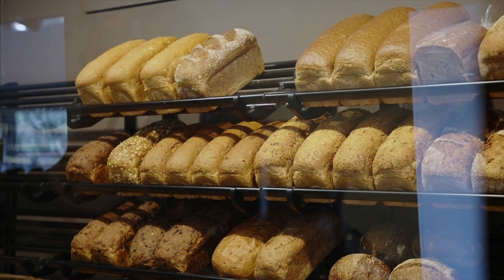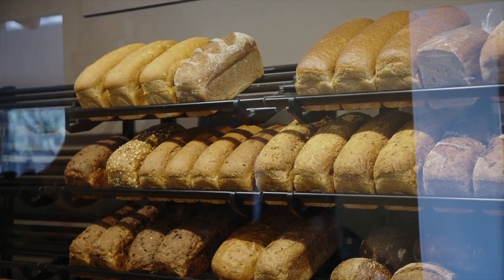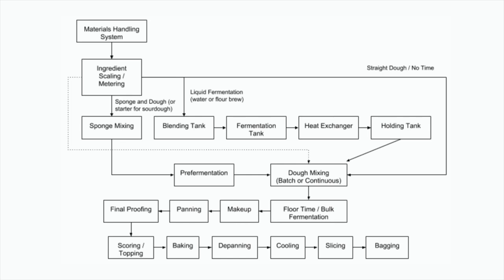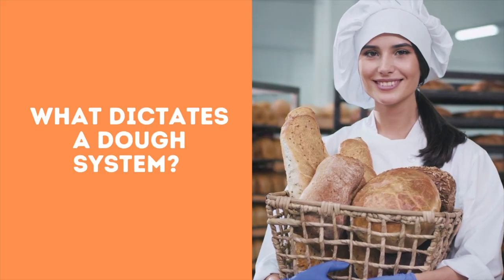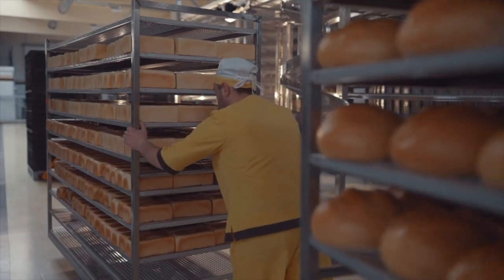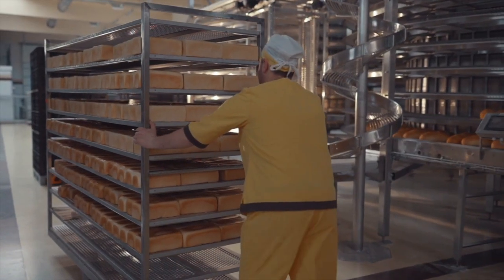How does it work? The following block diagram shows the production steps in bread processing using different dough systems. On a straight or no-time dough system, bread processing begins with the materials handling system, then ingredients are scaled or metered before moving on to sponge mixing, pre-fermentation, and dough mixing. After that comes floor time, makeup, panning, final proofing, scoring, baking, de-panning, cooling, slicing, and finally bagging.